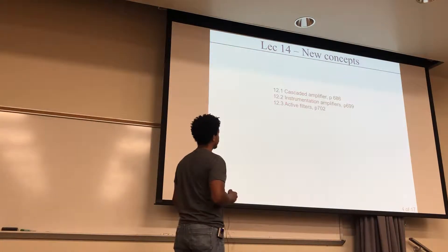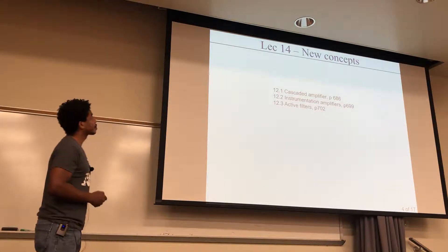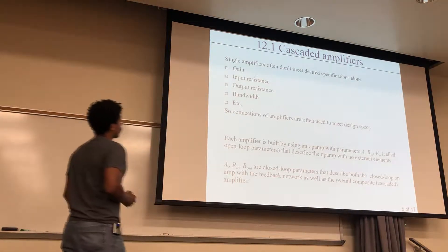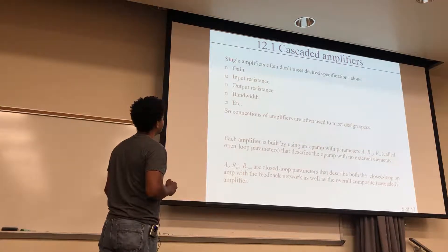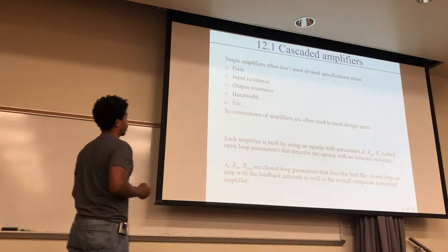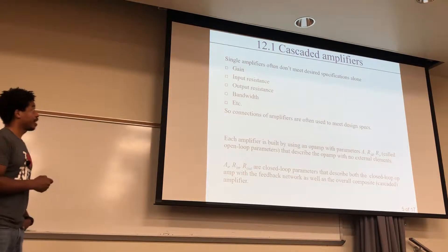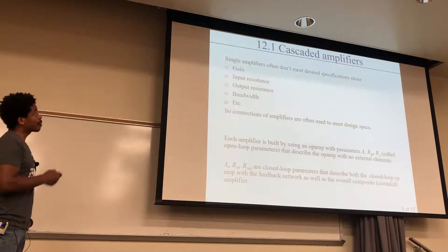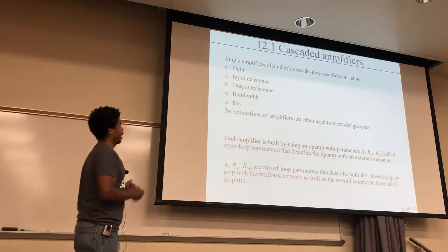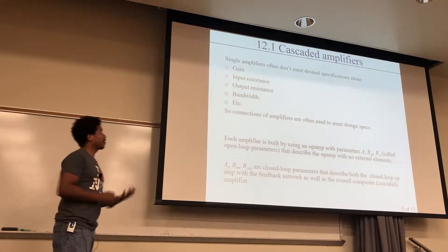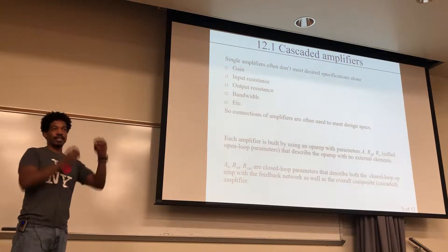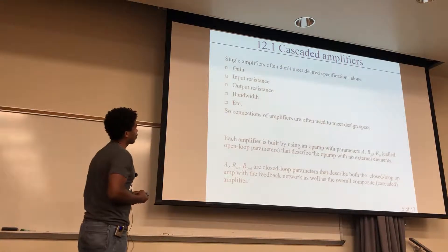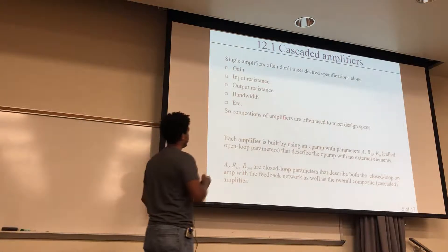So the new concepts: we'll talk about cascaded amplifiers, instrumentation amplifiers, and active amplifiers. For cascaded amplifiers, oftentimes single amplifiers don't meet desired specifications alone. You might need a particular gain, some type of input resistance, output resistance and bandwidth. If you have multiple specifications to meet, you're going to need an interconnected system with multiple amplifiers. That's why you need these connections to meet all of these specs.